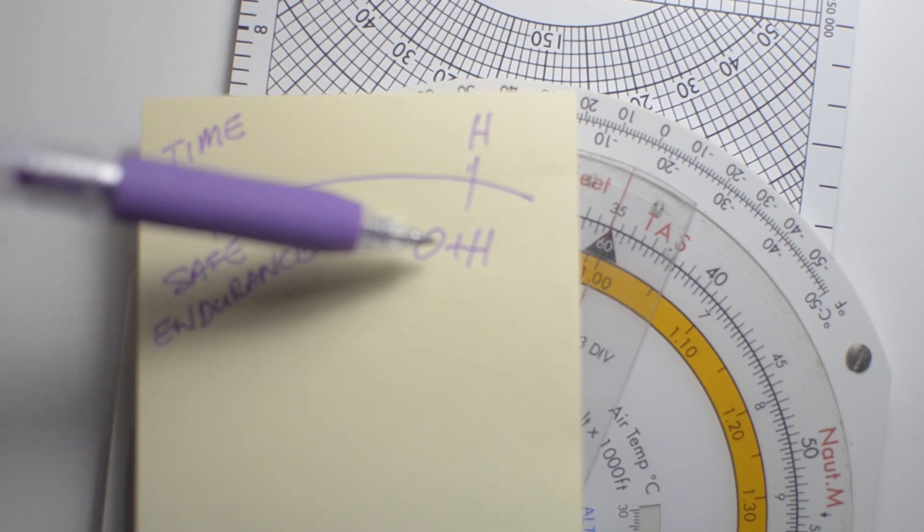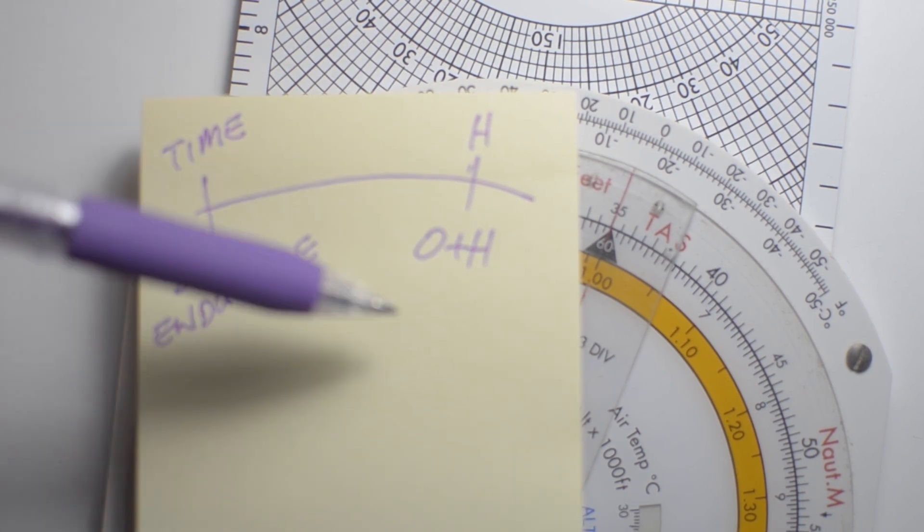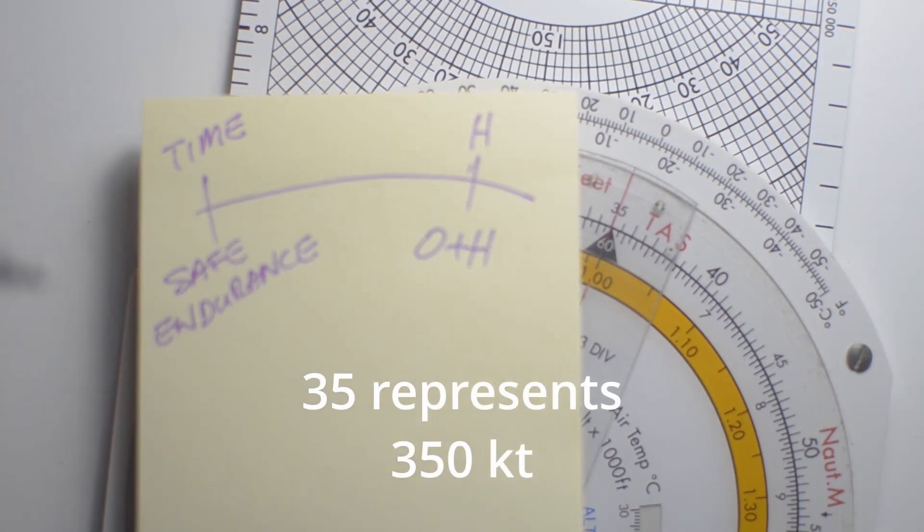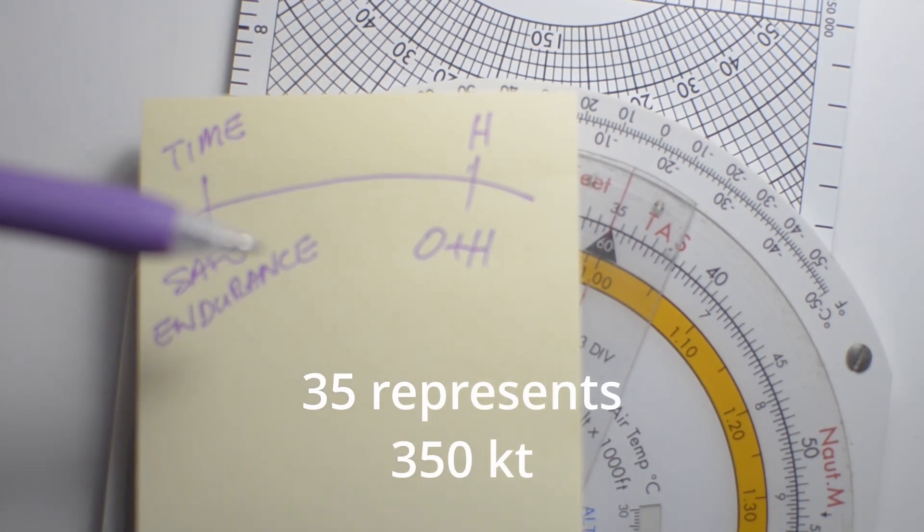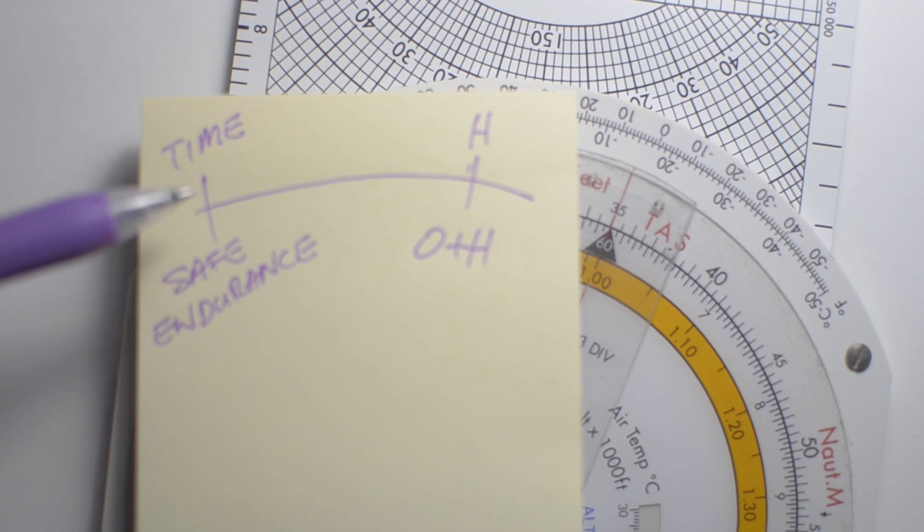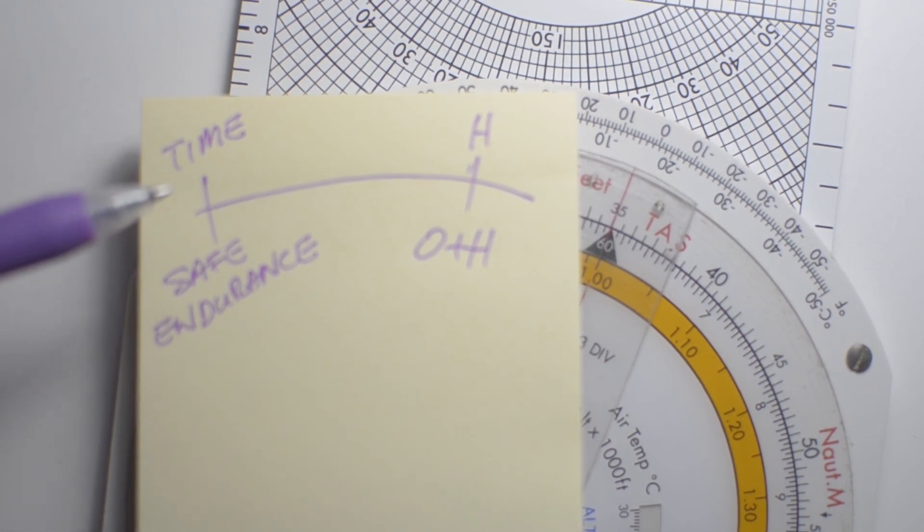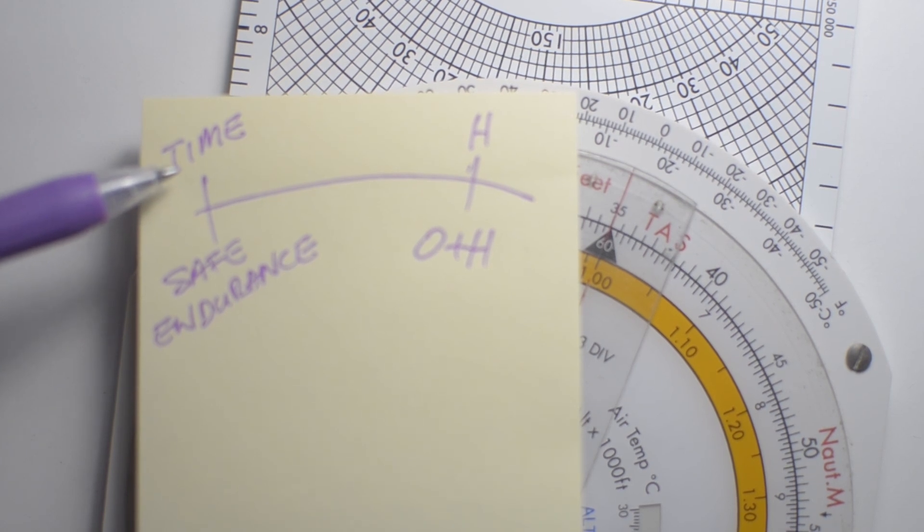Ground speed home over ground speed out plus ground speed home. 35, 600. And on the other side, we're going to line up safe endurance and the time that it will take us to fly from our origin aerodrome or departure aerodrome to that point which is known as the PSR or PNR.